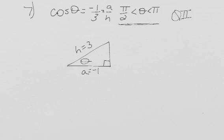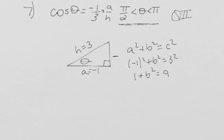That means that we can use the Pythagorean theorem, a squared plus b squared equals c squared, to find our remaining side. Plugging in negative one squared plus b squared equals three squared, we solve and get one plus b squared equals nine, b squared equals eight.